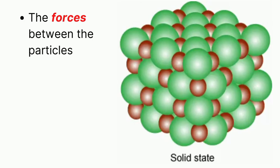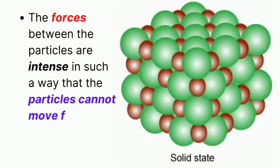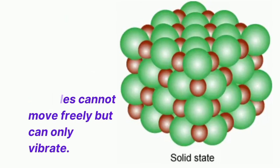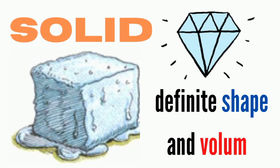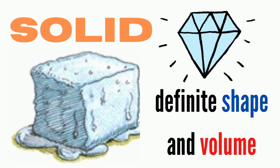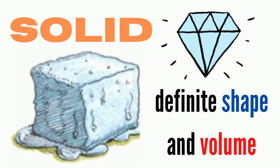The forces between the particles are intense in such a way that the particles cannot move freely but can only vibrate. As a result, the solid has a stable, definite shape and a certain volume. Solids can only change their shape by force, as if they were broken or cut.